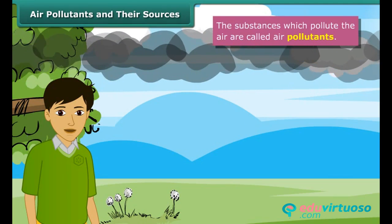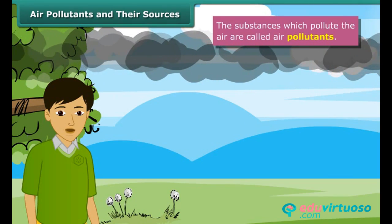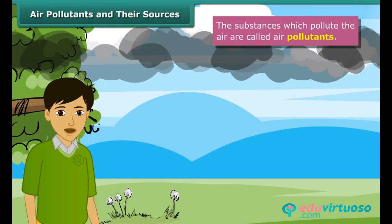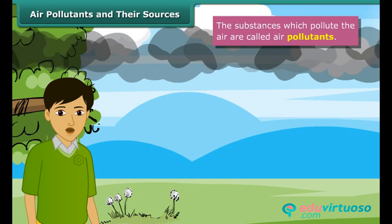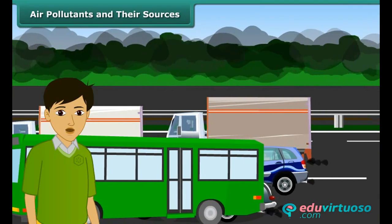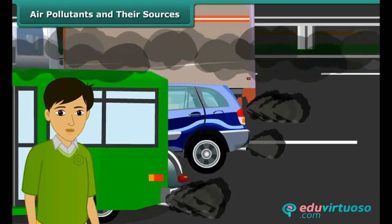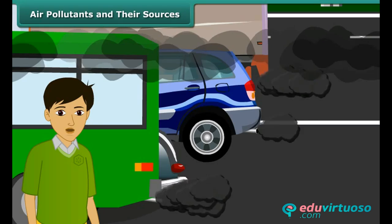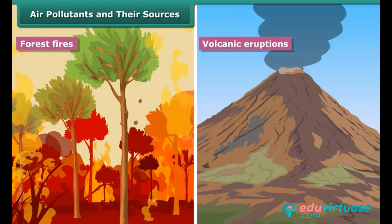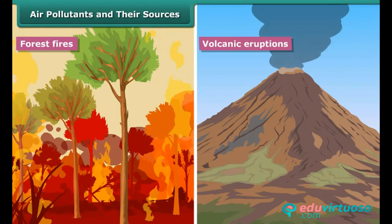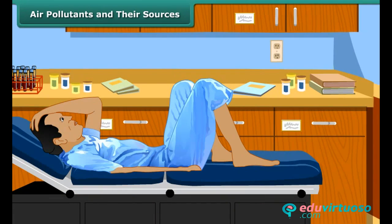Toxic gases like carbon dioxide, sulfur dioxide, nitrogen dioxide, and carbon monoxide are often released by the engines of vehicles like trucks and buses. Sometimes they may come from natural sources like smoke and dust arising from forest fires or volcanic eruptions. These gases can make healthy people sick and sick people even worse.